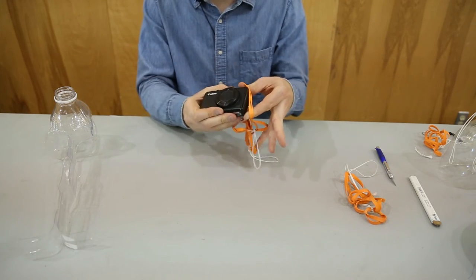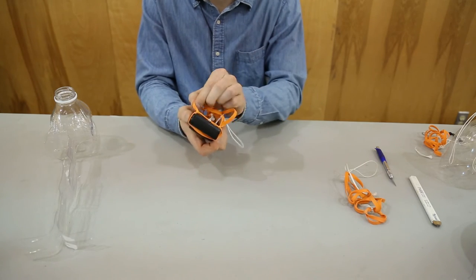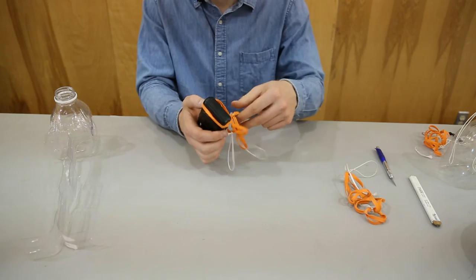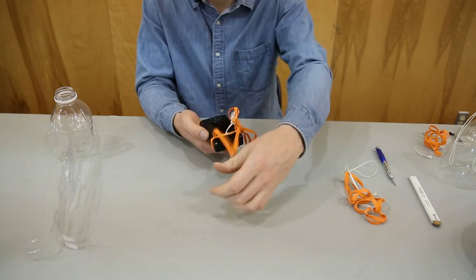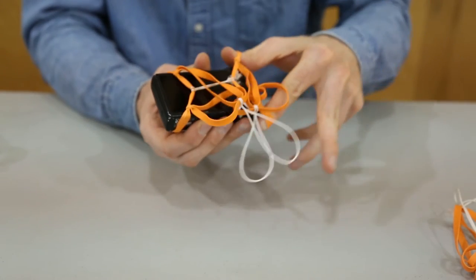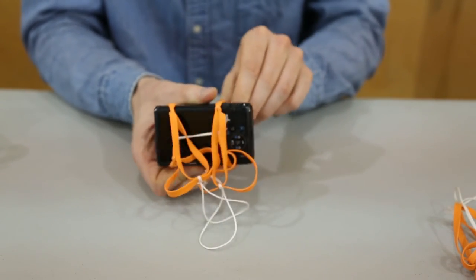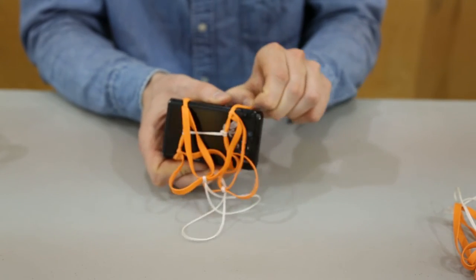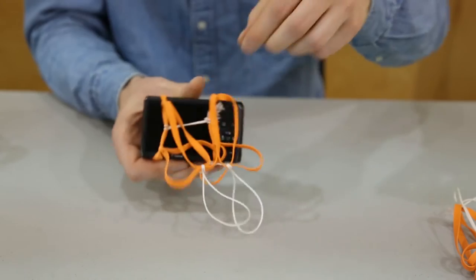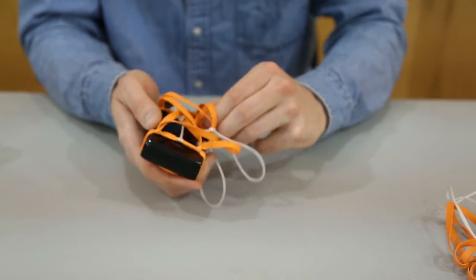I want the harness to be at the back of the camera, with the rubber bands at the corners. Again, I'm positioning the bands so that they don't hit any of the buttons or zoom levers so everything is still accessible on the camera.